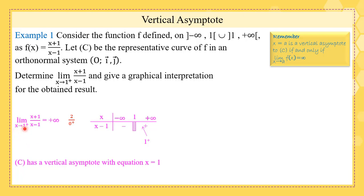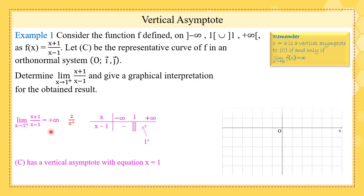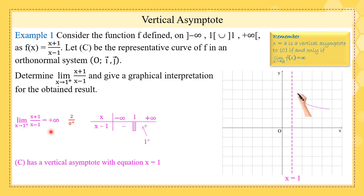We have a vertical asymptote because when x tends to a constant, the answer is infinity. Let's see it graphically — this is x equals one, which is a vertical line. When x is one-plus, to the right of one, you see the distance between the curve and the asymptote tends to zero.